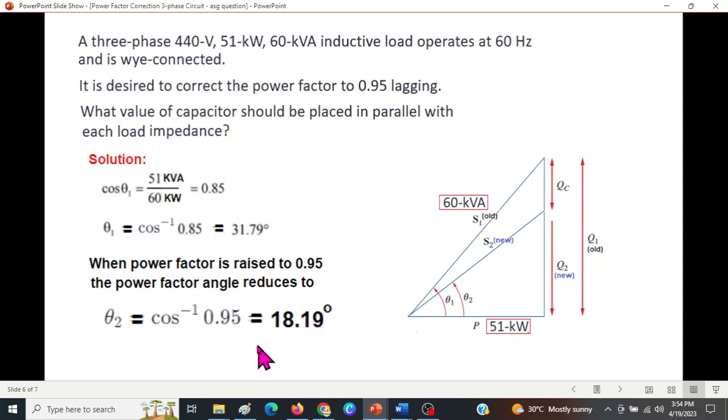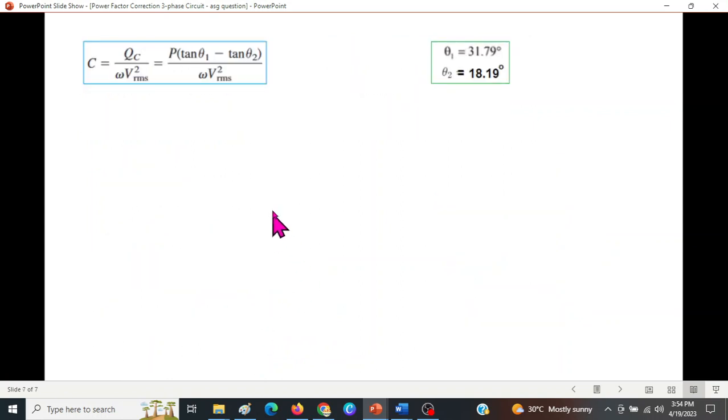So we will use these two angles to solve this formula. This is the value of the capacitor. And now this is a formula for the single phase circuit. For here, for the three phase, all we have to do is change this P. So for three phase circuit the formula will be modified as P per phase, and other things remaining same.